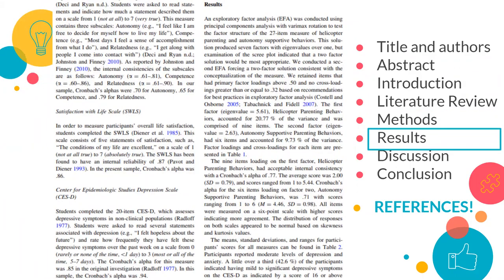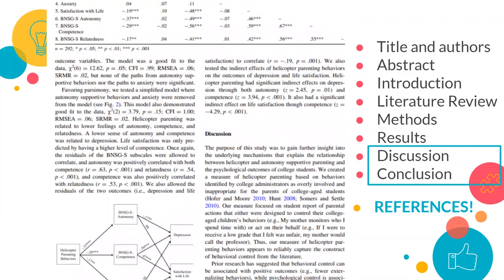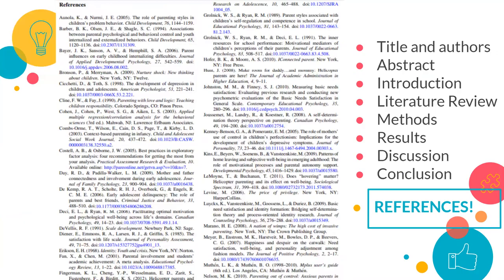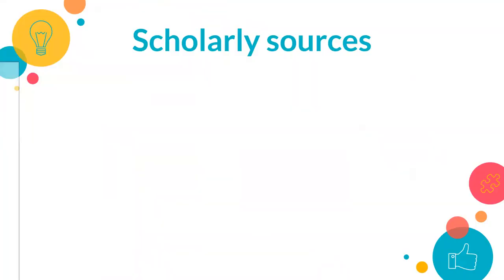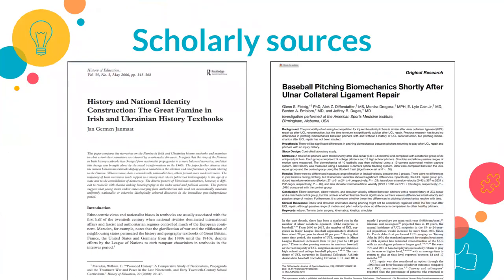A methods section shows how a study was conducted, who the participants were, or how the information was collected. This is followed by results — what happened in the study — then a discussion or analysis of what it all means, and a conclusion. At the very end of a peer-reviewed scholarly article will be a whole list of references that were consulted. If you find an article and see that there are only two or three references, double-check with your instructor to make sure it's an article you can use, because it may not be quite what you're looking for.